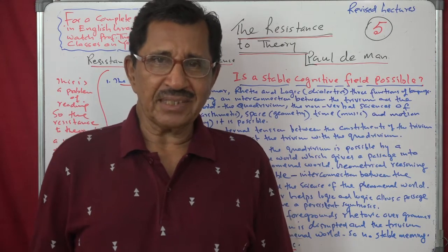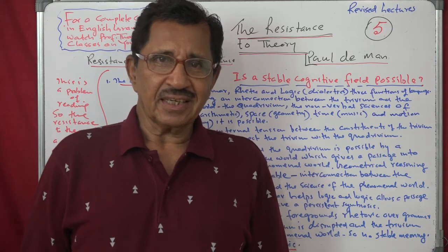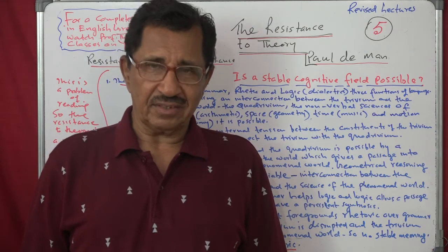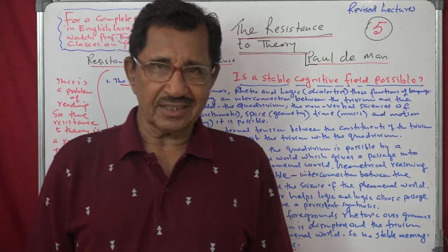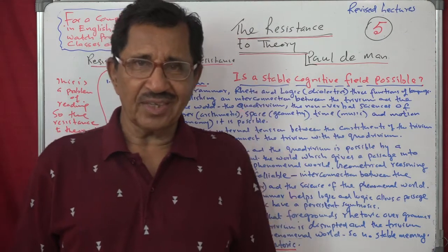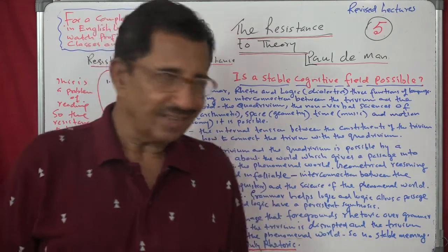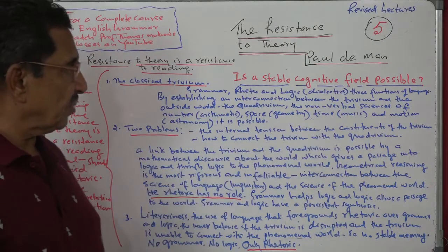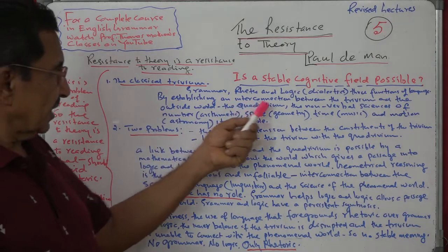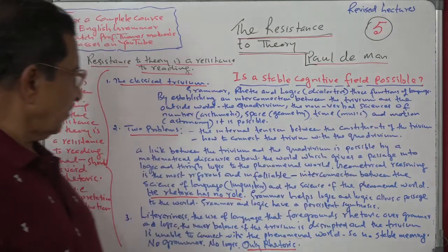Trivium means three functions of language. One is the grammatical function, second is the rhetorical function, and the third is the logical function. Now, before getting into what these things mean, we will go through the outline. The classical Trivium — grammar, rhetoric, and logic or dialectics — represents three functions of language.